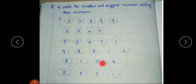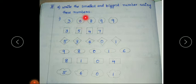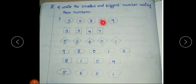Some more questions are given: write the smallest and biggest number using these digits. The first set is three, three, zero, eight, nine, nine. We know zero is the smallest digit but we write it in the second place. So first write three, then zero, then eight, then nine, nine. The smallest number is thirty thousand eight hundred and ninety-nine.